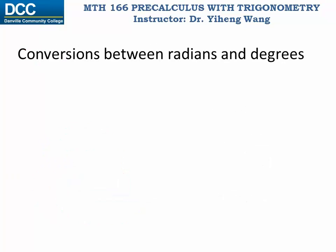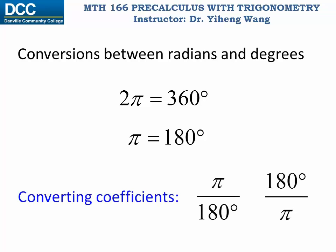The previous example tells us that there is a relation between angles measured in radians and angles measured in degrees: 2π equals one full revolution, which is 360 degrees, or π equals 180 degrees. We can use this to generate two conversion coefficients to help us convert angles between radians and degrees.